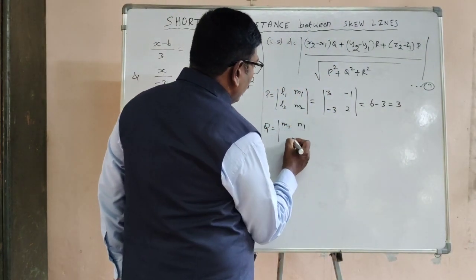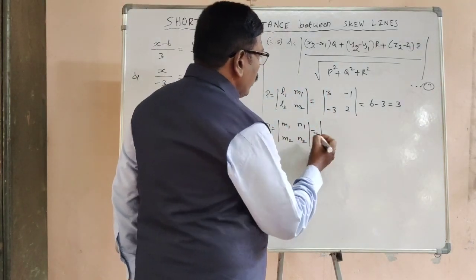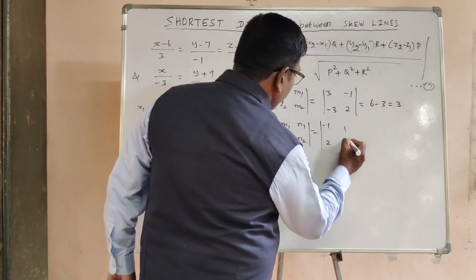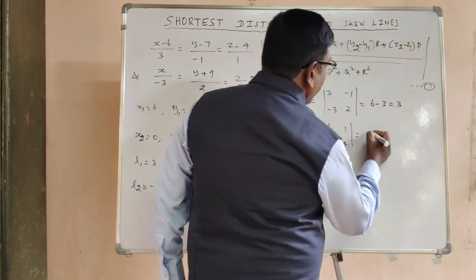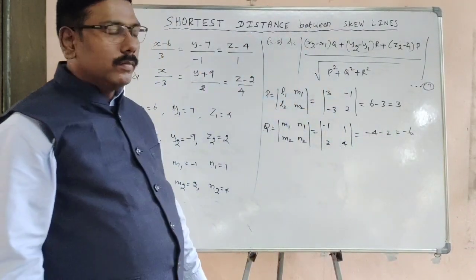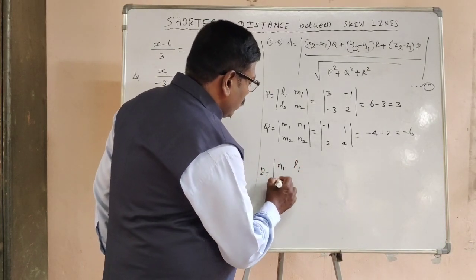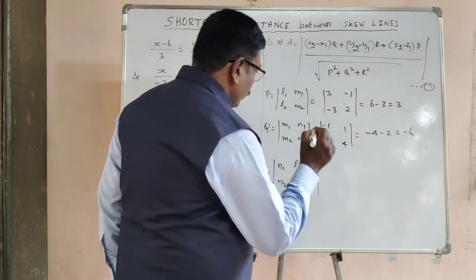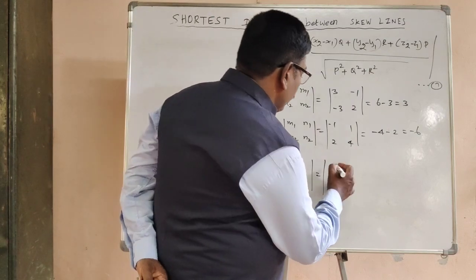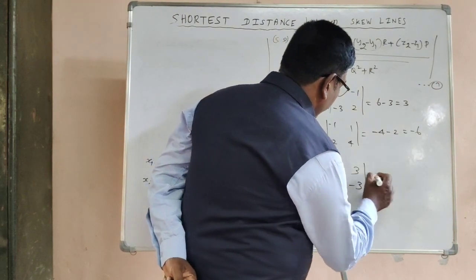And Q equals M1, N1, M2, N2. So minus 1, 1, 2, 4. So minus 4 minus 2 is minus 6. And R equals N1, L1, N2, L2. So 1, 3, 4, minus 3. So 1 into minus 3 is minus 3, minus 4 into 3 is 12, so minus 15.